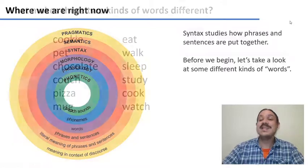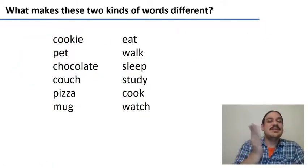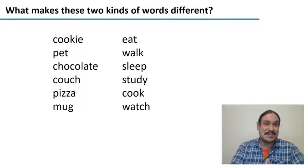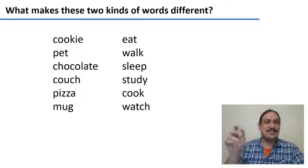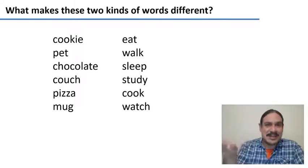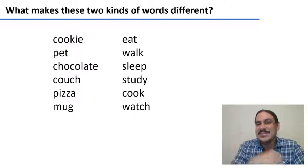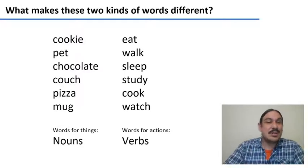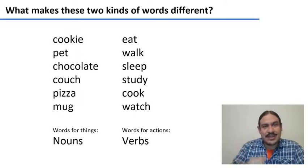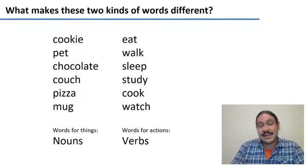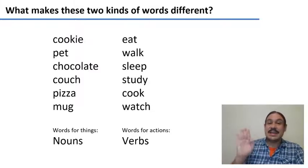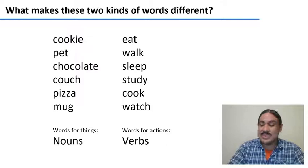Before we begin with syntax, let's take a look at different kinds of words. On the left column we have words like cookie, pet, and chocolate. And on the right, we have words like eat, walk, and sleep. What kind of words are they? The ones on the left are usually called nouns — they're words for things. They could be tangible things like a cookie or chocolate that you can hold in your hand, or intangible things like love, freedom, or respect. On the right, we have words for actions like eat, walk, sleep, and so forth. We call these verbs.